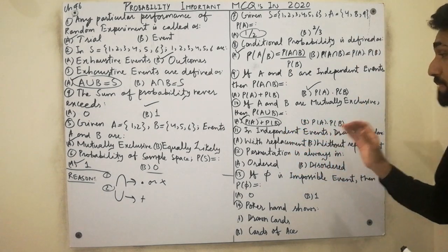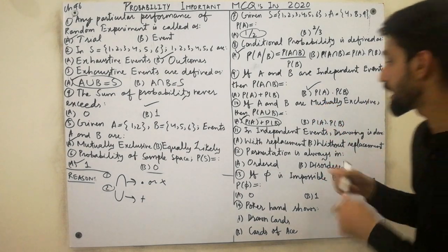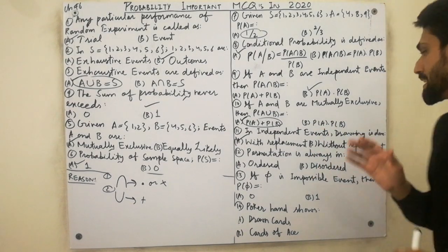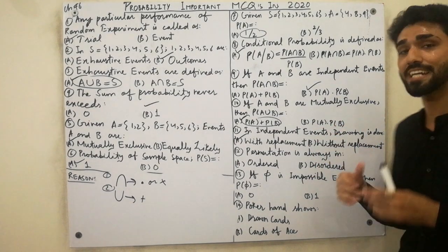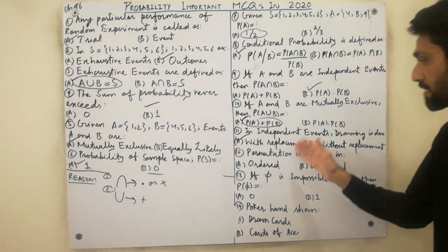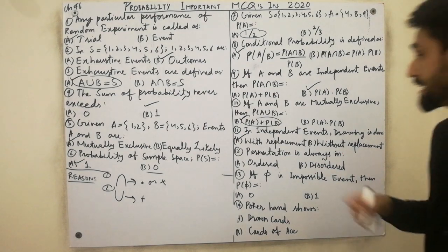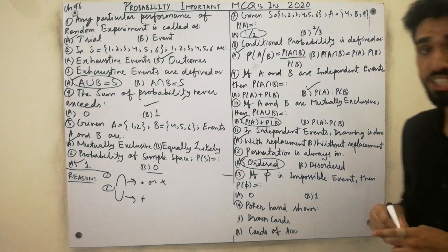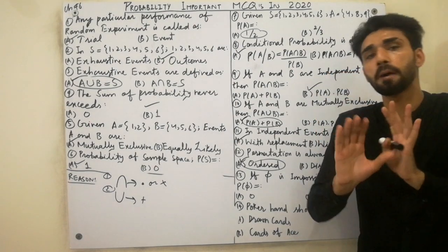In independent events, drawing is done with replacement. Must remember: independent events use with replacement. MCQ on permutation: permutation is always in arrangement or order, but combination is not in order. Also remember: the value of 5! is equal to 120. Poker hand shows cards drawn without replacement.